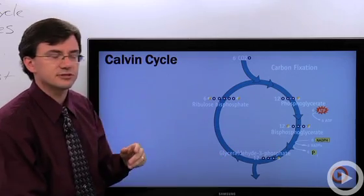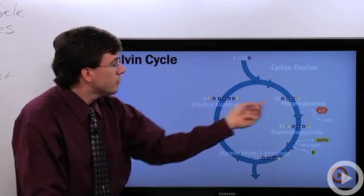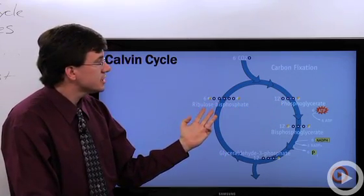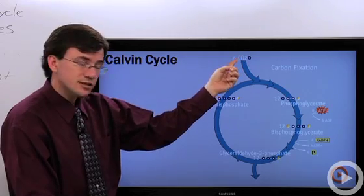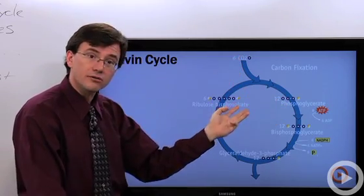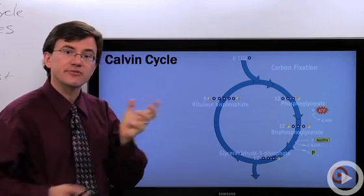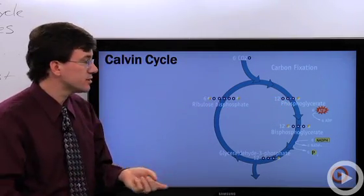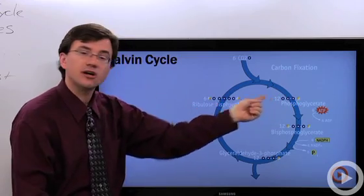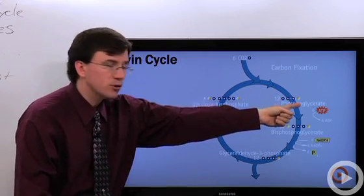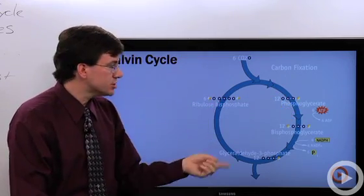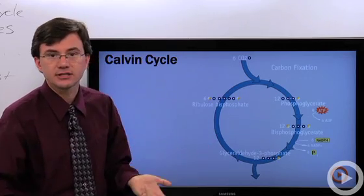I'm used to calling it phosphoglyceric acid. Now for every six ribulose bisphosphates that I add six carbon dioxides to, that would give me 12 phosphoglycerates. Now I need to energize this molecule in order to make some of the chemical changes that I want to make to it. So I add a phosphate onto the opposite end. It already had one phosphate. Now it has two. So we call it bisphosphoglycerate.